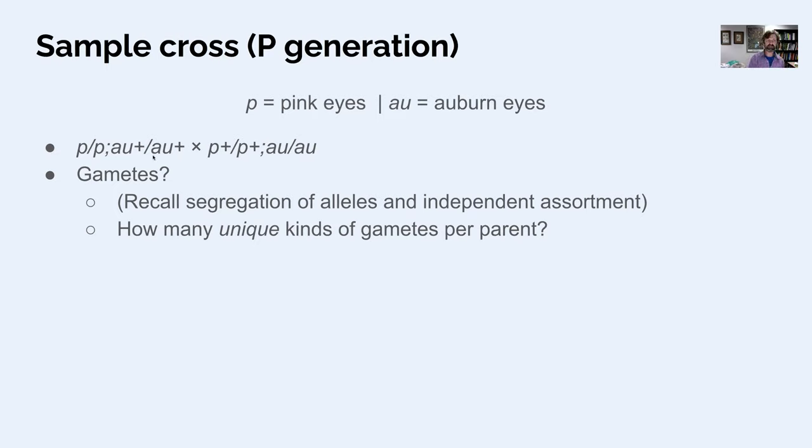So if we have these as our parent genotypes, a pink eyed parent and an auburn eyed parent, what are the kinds of gametes they can make? Well, they're homozygous for both genes. So the pink eyed parent is going to contribute a little p to the gamete and an au plus to the gamete.